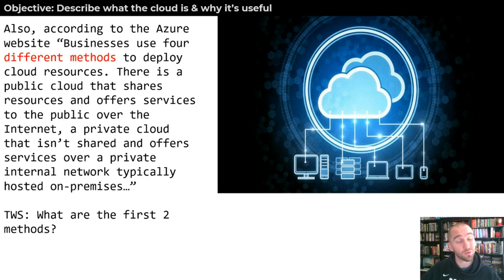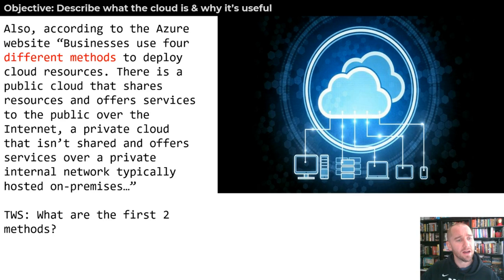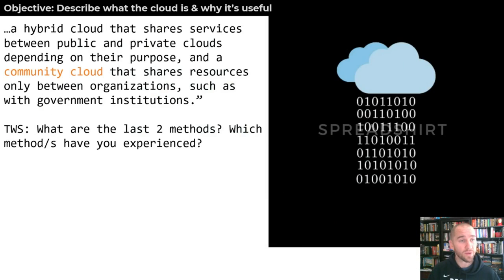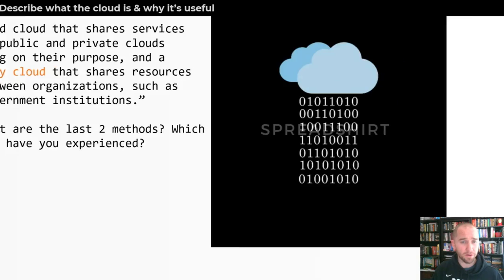According to Azure's website, businesses use four different methods to deploy cloud resources. There's a public cloud that shares resources and offers services to the public over the internet — often totally free or freemium, maybe showing you ads. A private cloud is not shared; it offers services over a private internal network, typically hosted on premises. A hybrid cloud shares services between public and private clouds. And then a community cloud shares resources only between organizations.